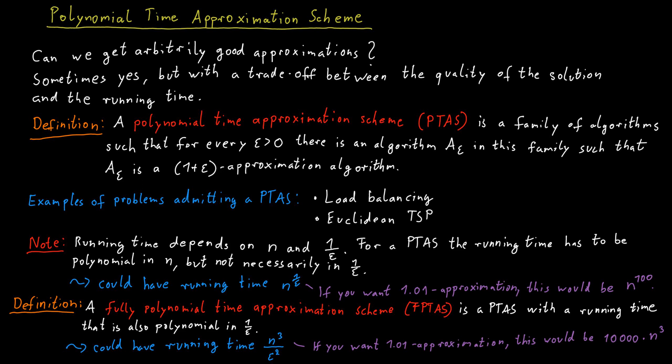Now, 10,000 is not a small number. But as you can see, the exponent in this function is not very large. So it scales much better than what we had in the case of a PTAS.